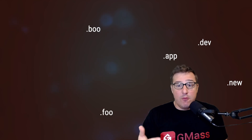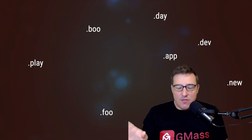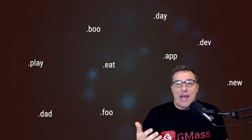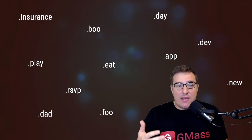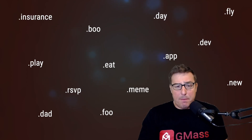That includes .dev, .app, .new, .boo, .foo, .play, .day — this is, yes, very Dr. Seuss — .eat, .dad, .rsvp, .insurance, .fly, and most importantly, .me.